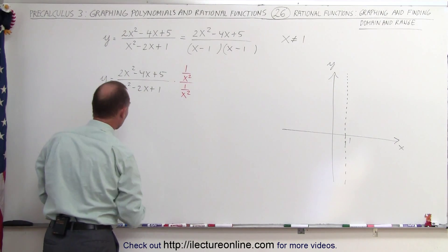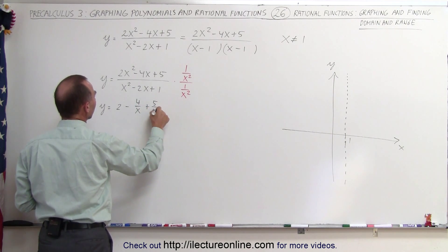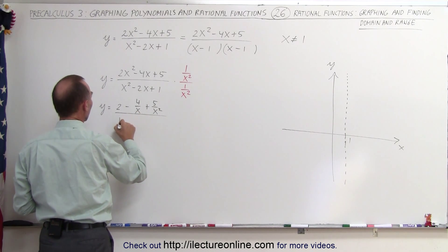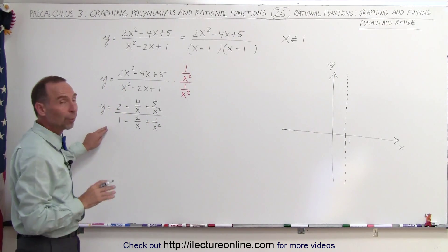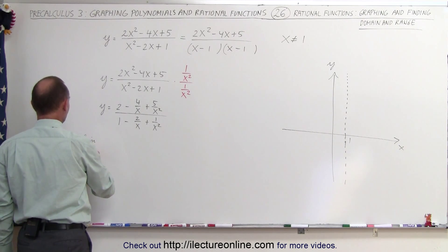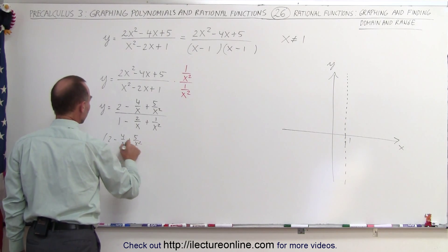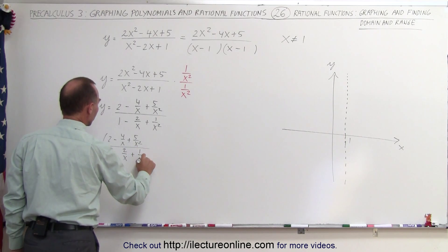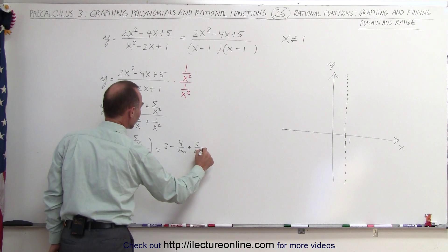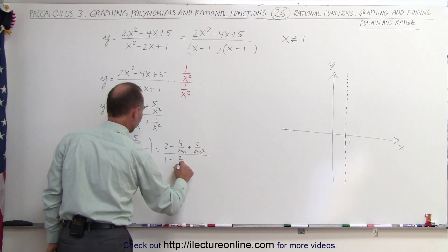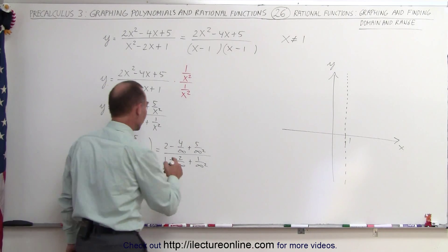When we do that, we get y equals (2 minus 4/x plus 5/x²) divided by (1 minus 2/x plus 1/x²). This is the exact same function in a different format. We can now take the limit as x approaches infinity. When we plug in that limit, any term with x or x² in the denominator goes to 0.